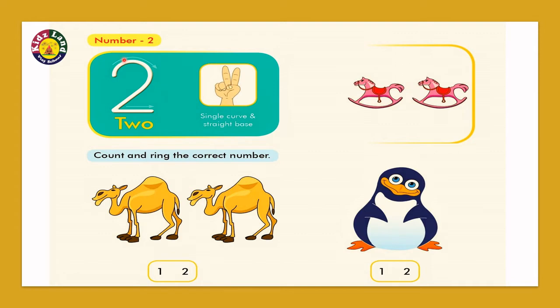And how do we write it? A small right curve, come down, and a sleeping line. Once again, I am telling. See, one right curve and come down with a sleeping line. Single curve with a sleeping line.